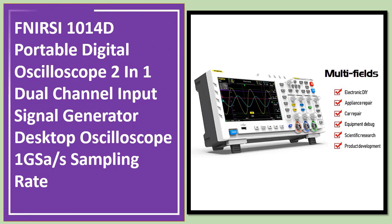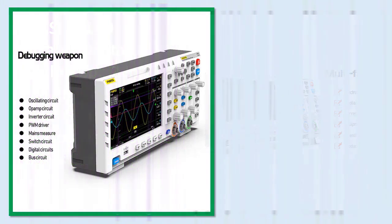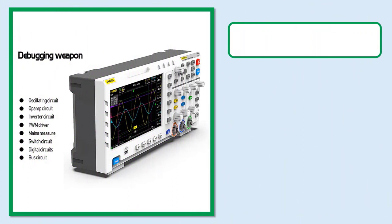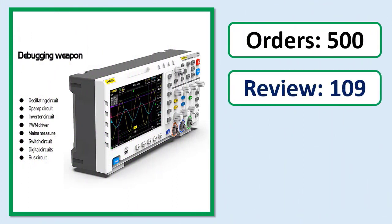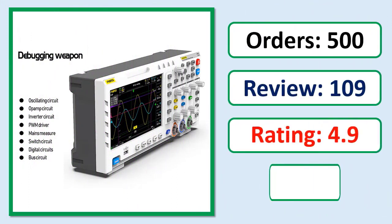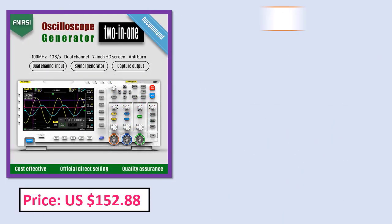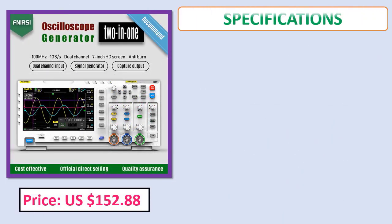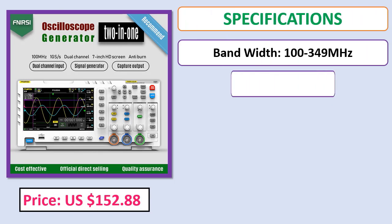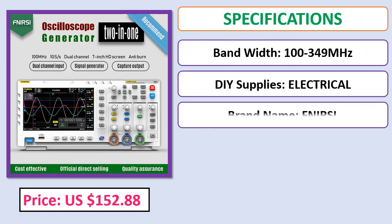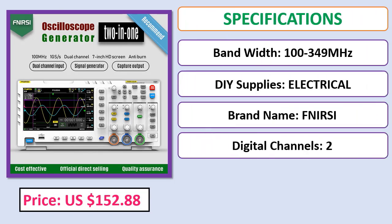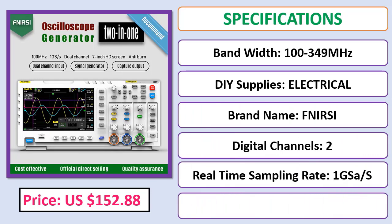Number 5: FNIRSI 1014D portable digital oscilloscope, a 2-in-1 dual channel input signal generator desktop oscilloscope with 1GS/s sampling rate. Review rating and price specifications are shown. Check the description below for the product link.